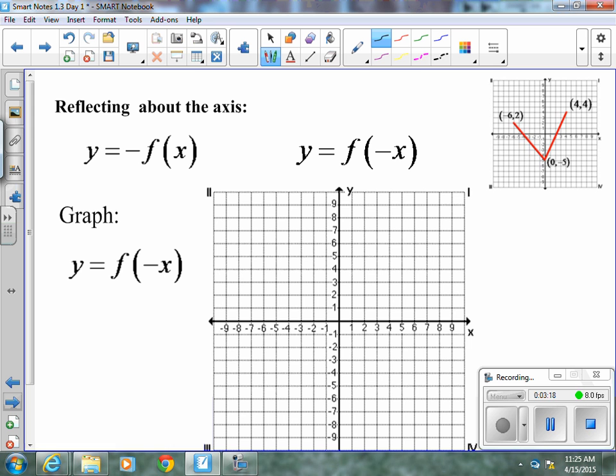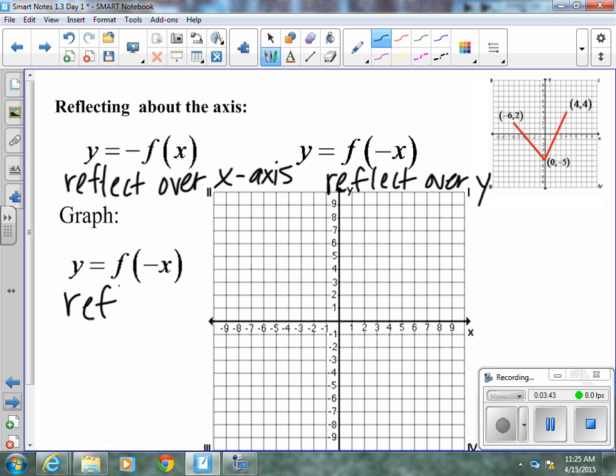Reflecting about the x-axis, when your negative is out front, this reflects over the x-axis. And when our x is just changed sign, it reflects over the y-axis. So notice, it's f(-x), so we're going to reflect over the y, which means our (-6, 2) will become (6, 2). Our (0, -5) will stay (0, -5), because it's on the y-axis, and our (4, 4) will become (-4, 4). And that's our f(-x).